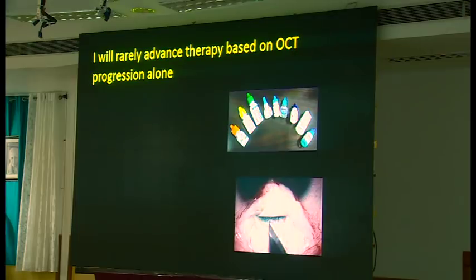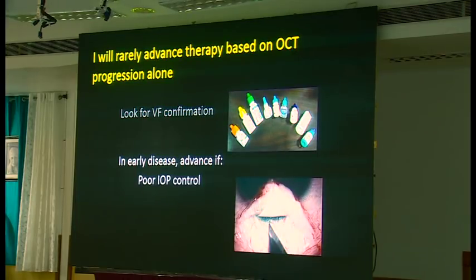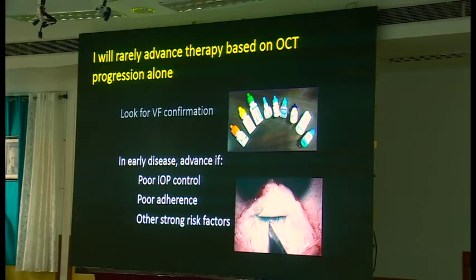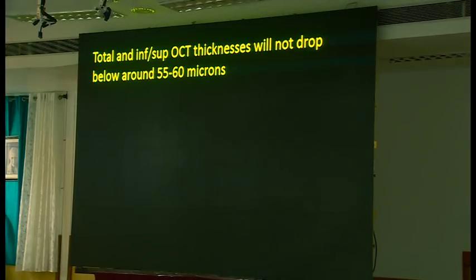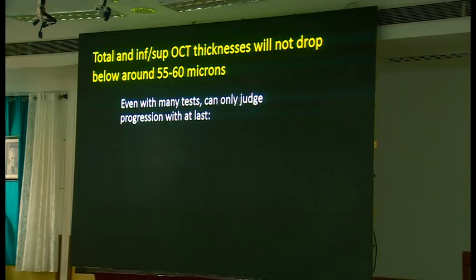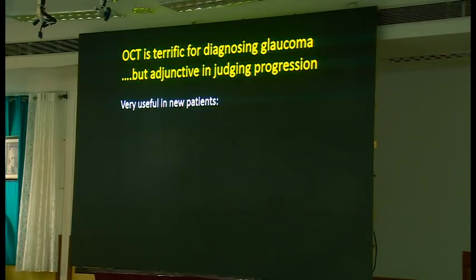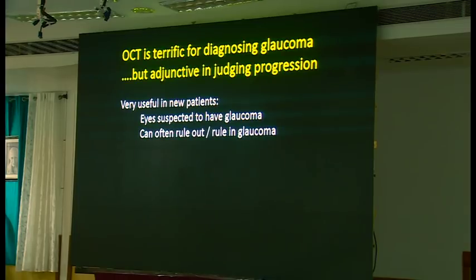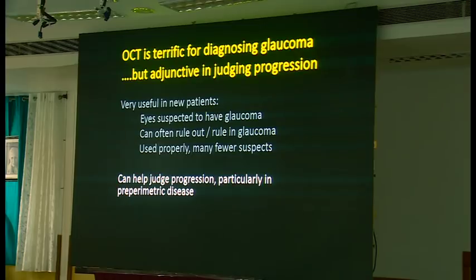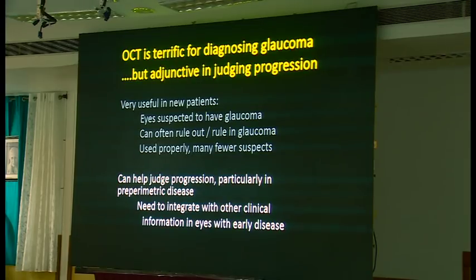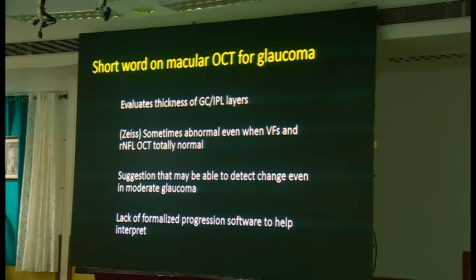I will rarely advance therapy based on OCT progression alone — I really look for visual field confirmation in early disease. I will advance if there are other factors suggesting things really are getting worse, such as poor IOP control, poor adherence, or other strong risk factors. Keep in mind that total thickness won't drop below about 50 to 60 microns, so you can only really judge progression if there's at least 5 microns of change, or 10 microns in the superior/inferior quadrants. Continued testing has little value once you reach a mild or moderate stage.